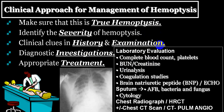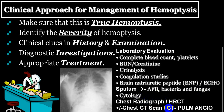Laboratory investigations include CBC, platelet count, blood urea, creatinine, urine analysis, and coagulative studies to identify coagulative factor defects. For cardiovascular assessment: BNP, NT-proBNP, and echocardiography are very helpful. Sputum examination confirms the presence of RBCs; you can look for AFB, bacteria, and fungi; cytological study can rule out malignancy. Chest X-ray and HRCT help identify both respiratory and cardiovascular groups.